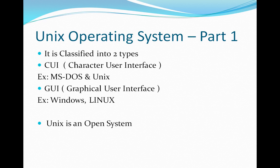The two types are CUI, known as Character User Interface — examples include MS-DOS and UNIX — and GUI, which is Graphical User Interface, with examples like Windows and UNIX. UNIX is also called an open system or open source.